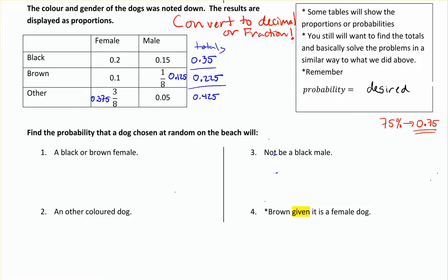Adding down to find the total proportion of females — so again, it's not the total number of female dogs, but the total proportion. So 0.2 and 0.1 is 0.3; adding 0.375 gives 0.675. Adding down the other column, we should get 0.325. And if we add up all the totals, you'll get a total of 1, which makes sense because the total proportion out of everybody should add up to 1.